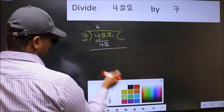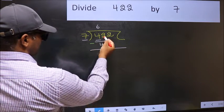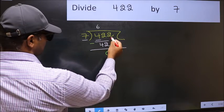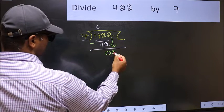Now you should subtract. 42 minus 42, 0. After this, bring down the beside number. So, 2 down.